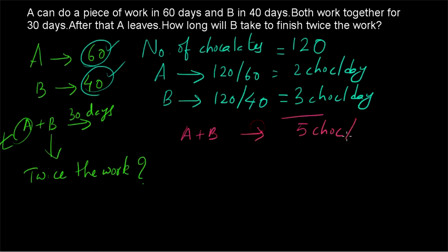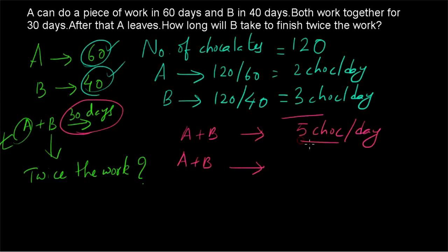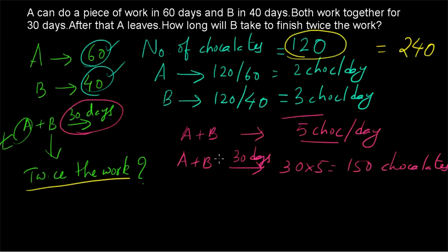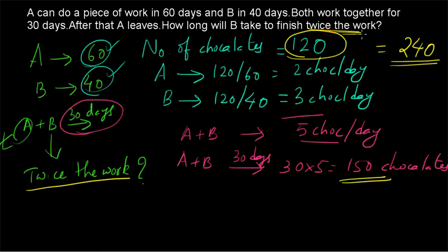A and B together have 5 chocolates per day and are working together for 30 days, so within 30 days they will consume 30 times 5 equals 150 chocolates. Since the question asks for twice the work, the total number of chocolates to be finished is 240. A leaves after 30 days and B has to finish the remaining work alone. The remaining chocolates are 240 minus 150 equals 90.